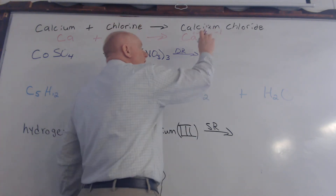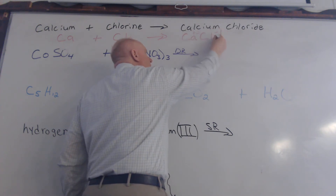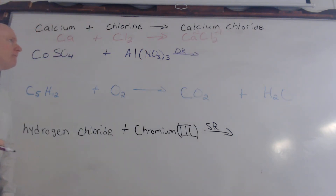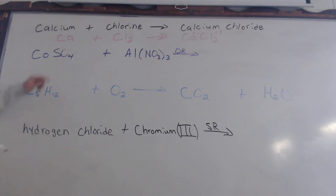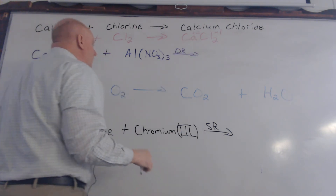Because the least common multiple is two — two divided by one gives you two. Now, do we need any coefficients? You're shaking your head no, and that would be correct. Why? It's already balanced. We've got one calcium on each side and two chlorines on each side.